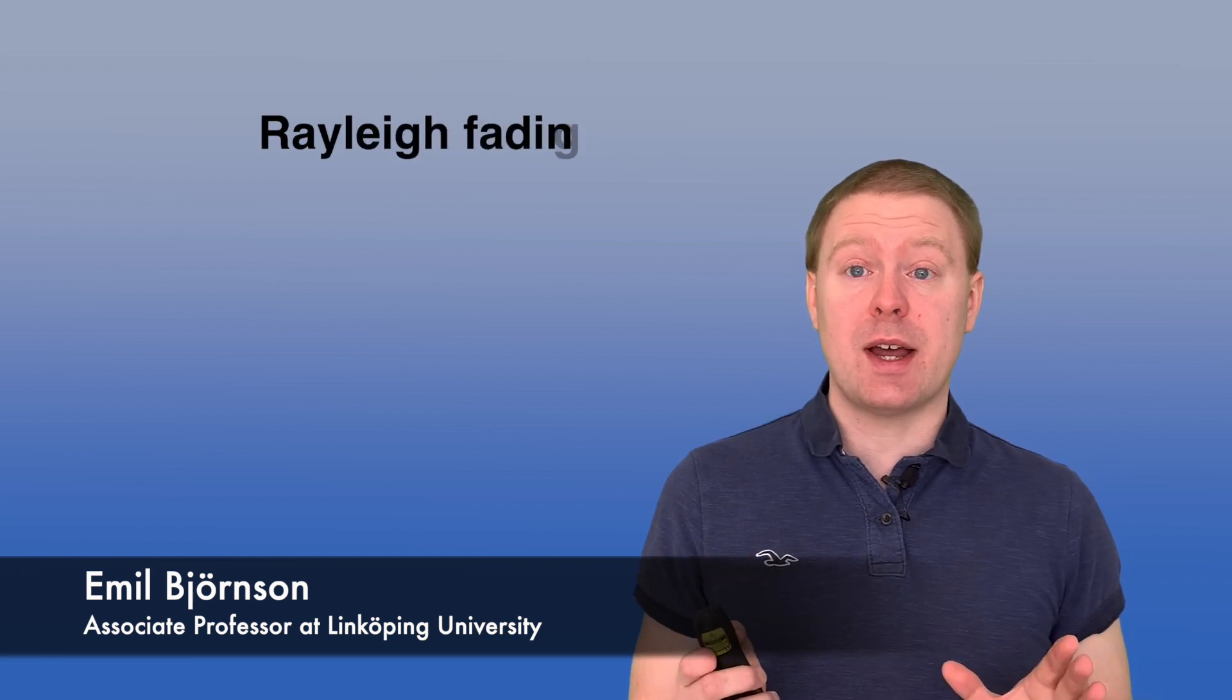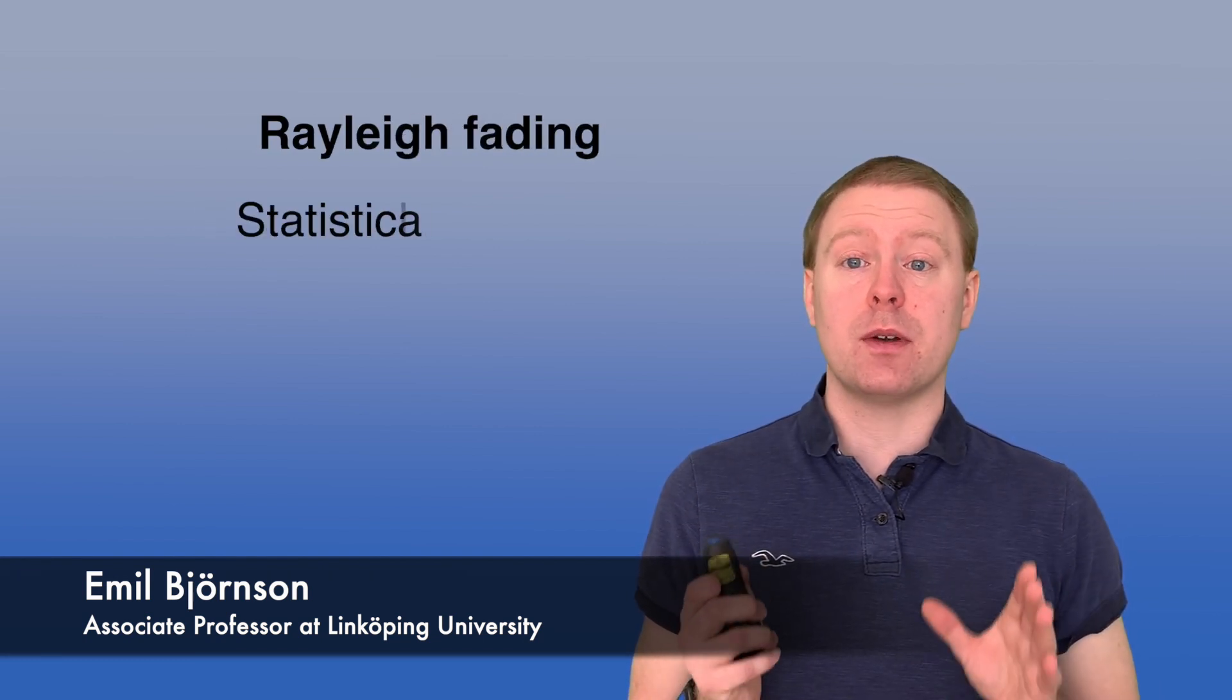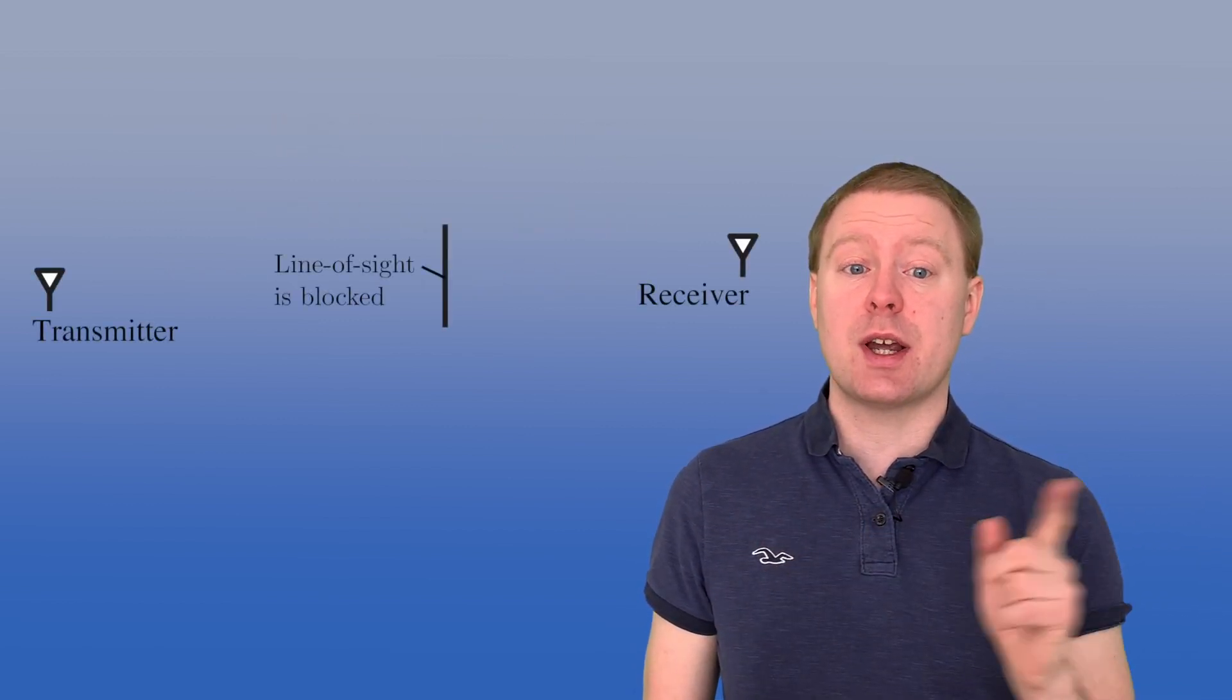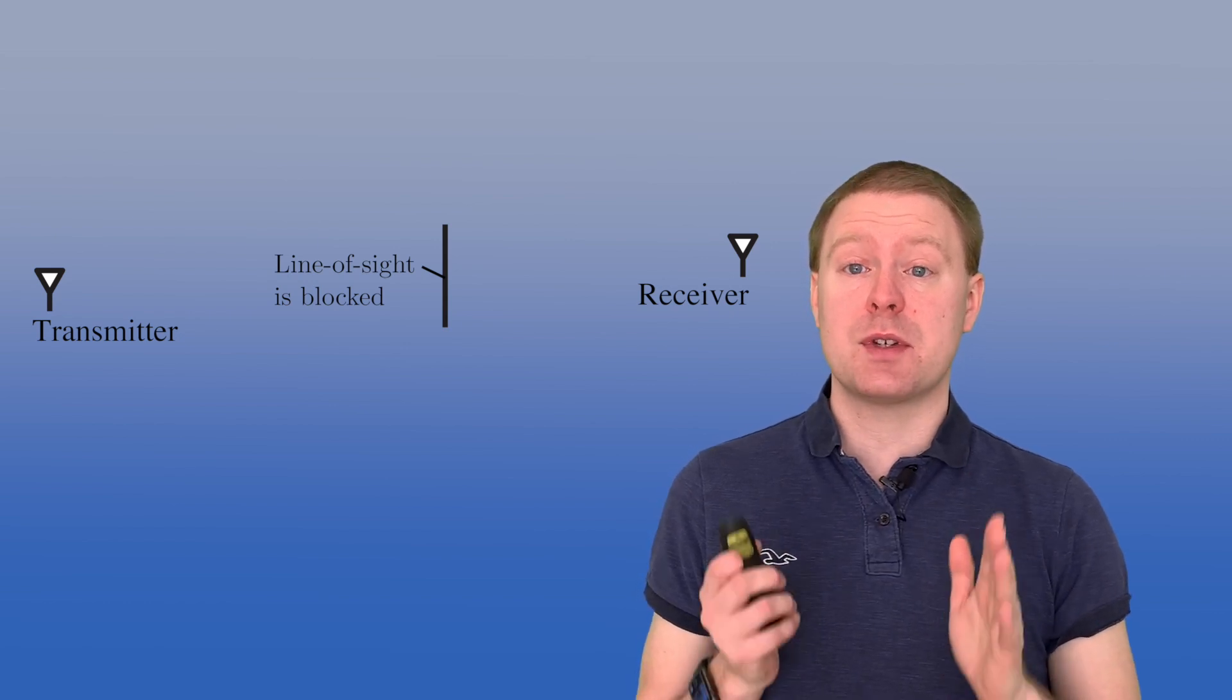We will now talk about Rayleigh fading channels, which is a statistical model for non-line of sight communication channels. This means that when we have a transmitter and the receiver, they can't see each other. So the line of sight path is blocked.